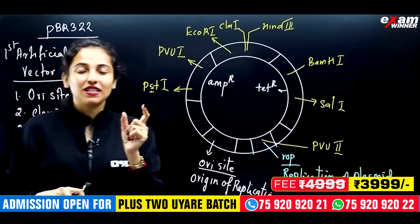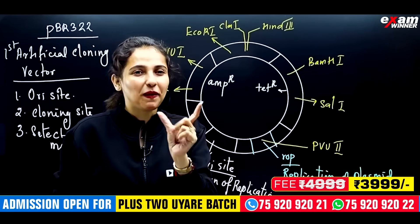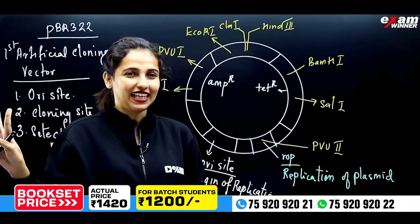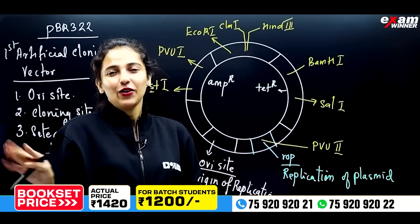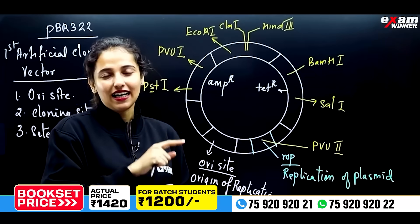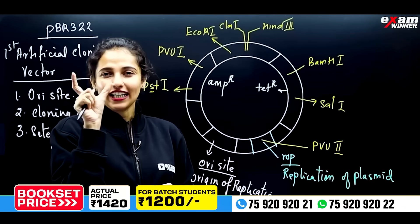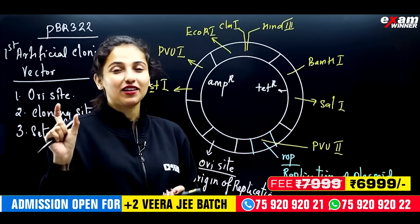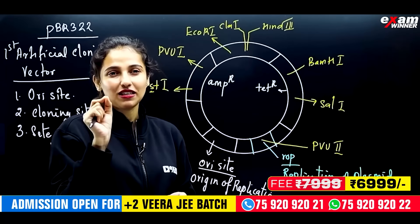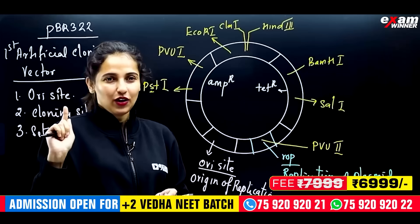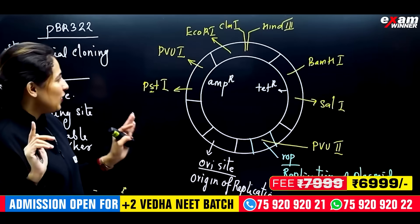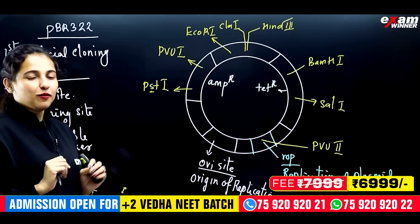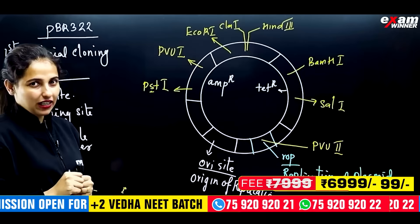What is the name of the sequence? There is a sequence of 6 nucleotides. The orientation frame is the same — it is a palindrome. So this is how we call PBR322 a cloning vector.